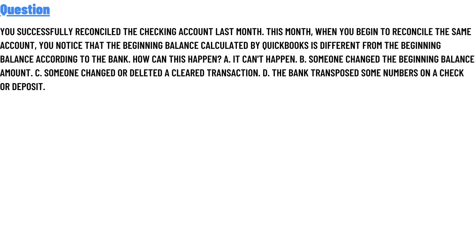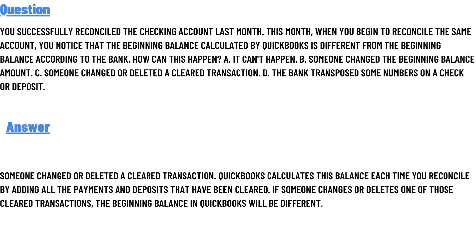Option C: someone changed, deleted, or cleared a transaction. Option D: the bank transposed some numbers on a check or deposit. The correct answer to the question is Option C — someone changed or deleted a cleared transaction.